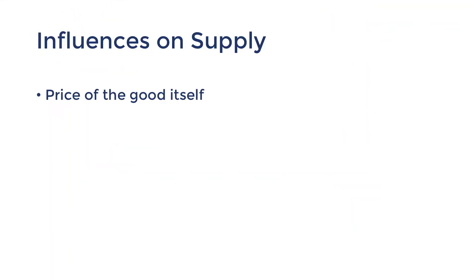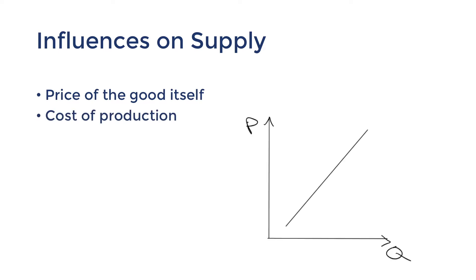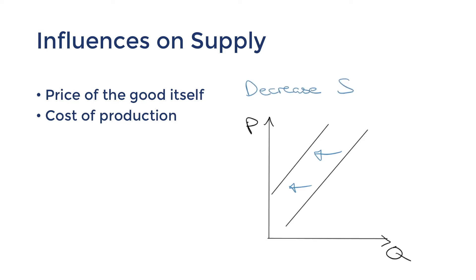The first influence that can cause a shift in the whole supply curve is the cost of production. If producing the good became more costly, the supply curve would shift to the left. If the price offered to producers stayed the same while the cost of production went up, the producer can make less profit, so they'll be willing to produce a lower quantity. Costs of production are often determined by the cost of resources, or the factors of production, such as land, labor, capital, and enterprise. For example, if minimum wages went up, driving up the cost of labor, supply would decrease.